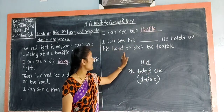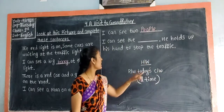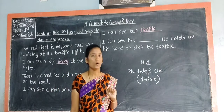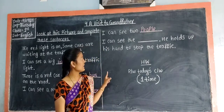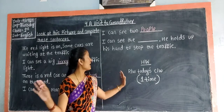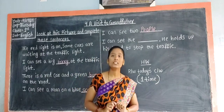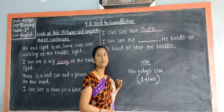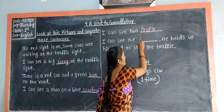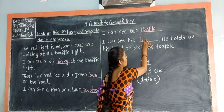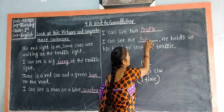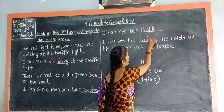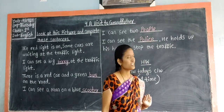'I can see the ___ . He holds up his hand to stop the traffic.' What you can see in the picture children? You can see the police. He holds up his hand to stop the traffic. So write 'police' in the blank. P-O-L-I-C-E. Police. See you children.